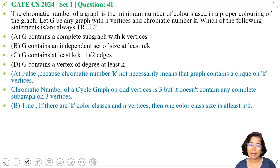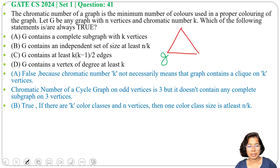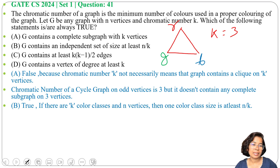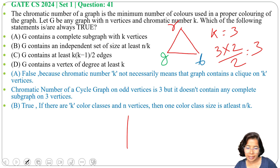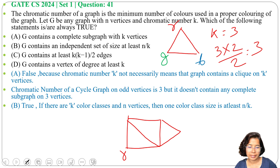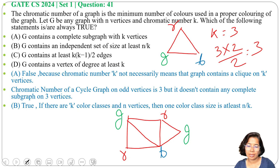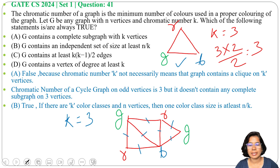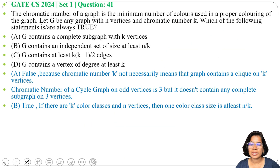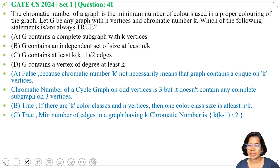Option C: G contains at least K×(K−1)/2 edges. This is true. Consider a cycle with 3 vertices — green, blue, and red — so K equals 3. Then K×(K−1)/2 equals 3×2/2 equals 3. For 3 colors, there are at least 3 edges. The minimum such graph is a cycle graph with 3 vertices requiring 3 edges. There can be more edges, but the minimum is 3. So option C is true — G contains at least K×(K−1)/2 edges.